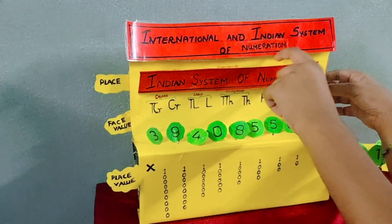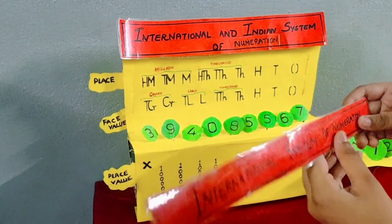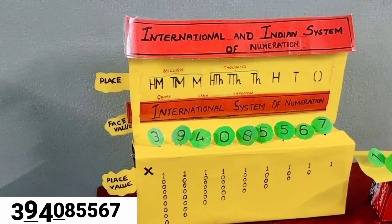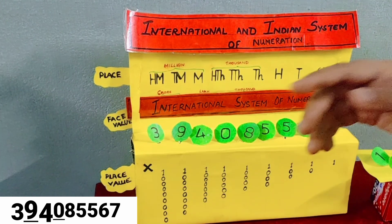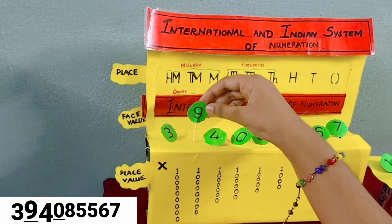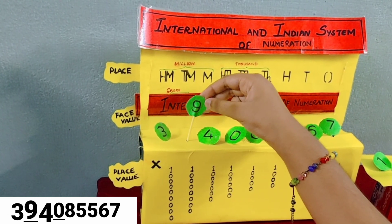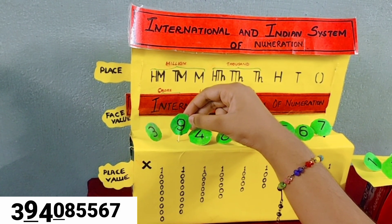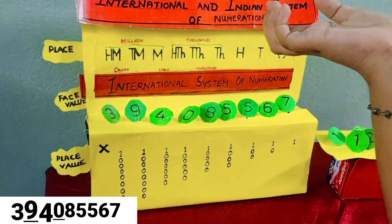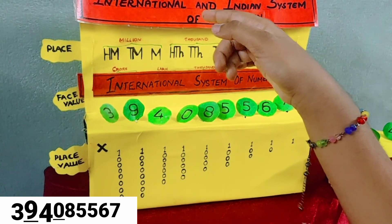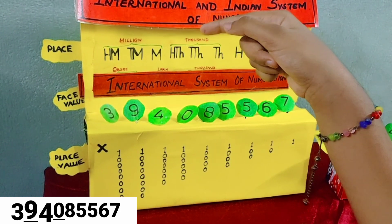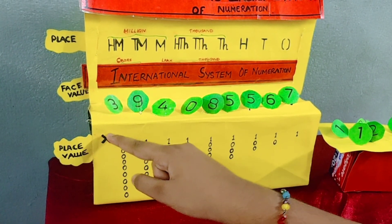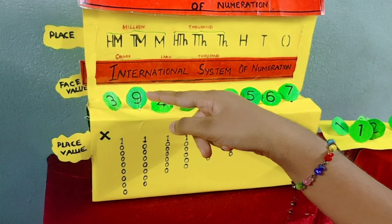Now let's see the place, face value, and place value in the international system of numeration. Here, 9 and 0 are underlined. Consider this number as a person. Look at his face — he is 9, so the face value is 9. He is sitting in the 10 million place, so the place is 10 million. What is his place value? 9 multiplied by 10 million, so the answer is 90 million.